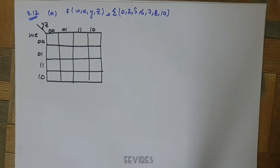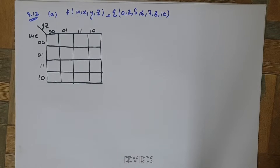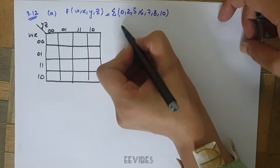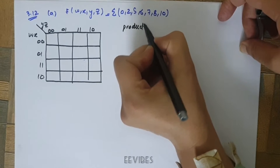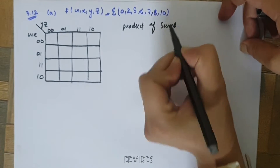Hi guys, in this lecture I am going to solve problem 3.12 from chapter 3, in which you have to simplify the given Boolean functions into the Product of Sums form. You have to find the final representation of the function as the Product of Sums, which is the standard form of the function.